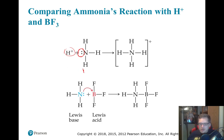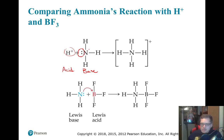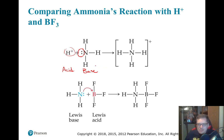So ammonia would be our Lewis base and H⁺ would be our Lewis acid, and we form the ammonium product. This would also be a Brønsted-Lowry acid-base reaction, because something had to give up that hydrogen — your proton donor — and ammonia is accepting that proton, being your proton acceptor.